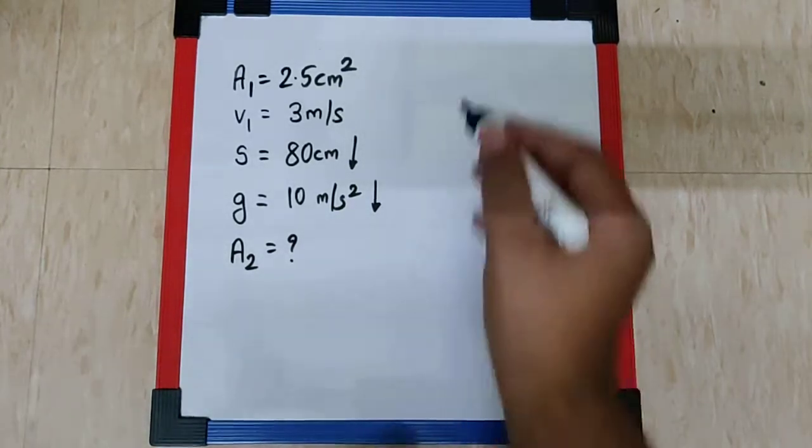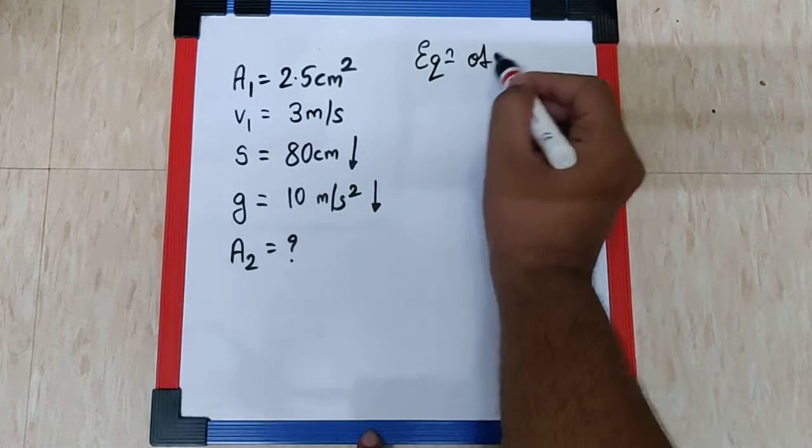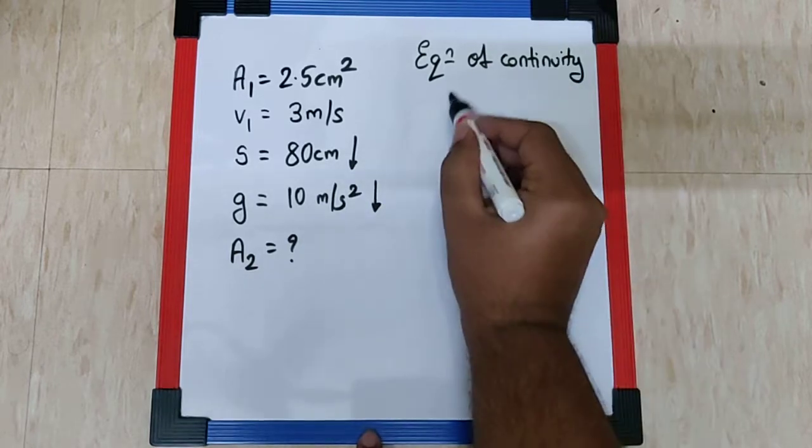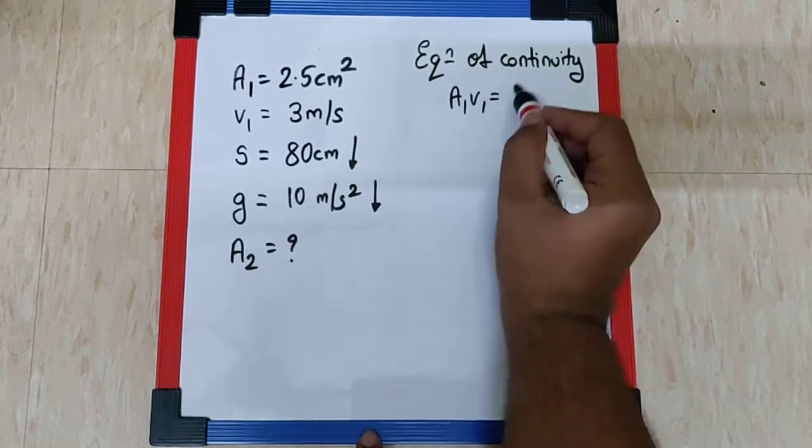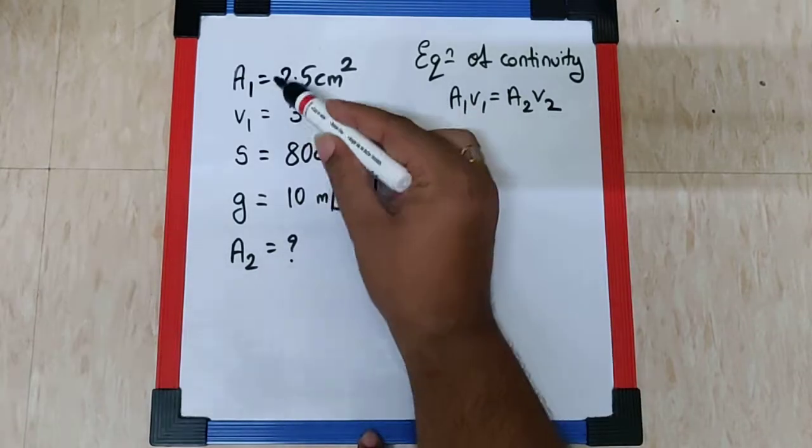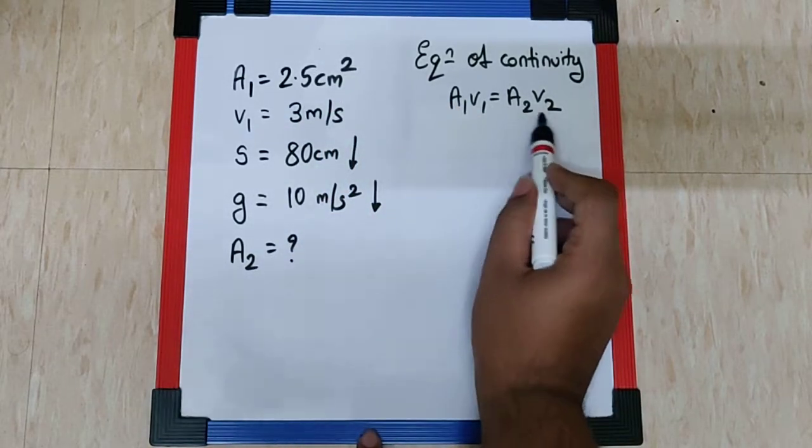Now, if you understand the usage of equation of continuity, we have the formula as A1V1 = A2V2. Now A1 and V1 both are given to us. So A2 is what we are supposed to find. For this we need to know V2.